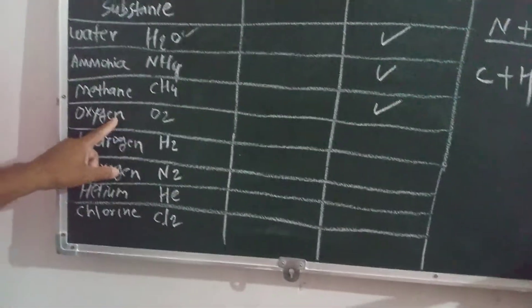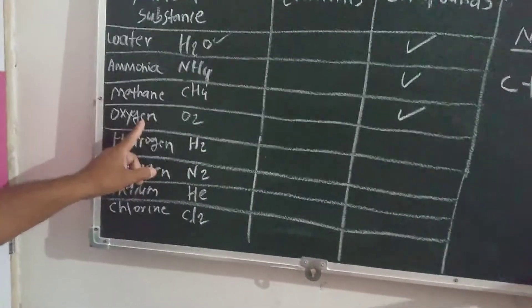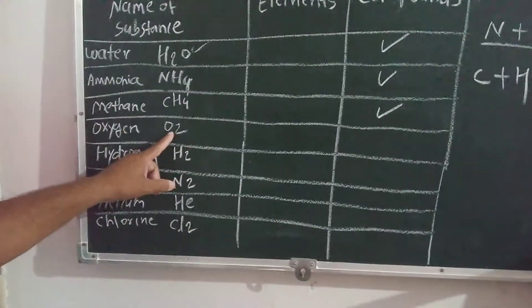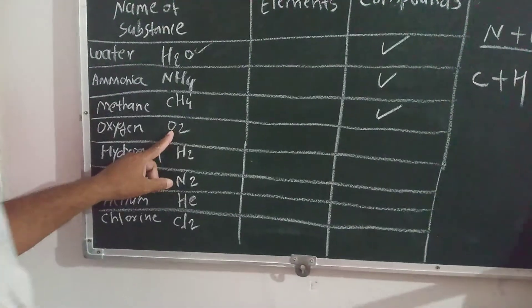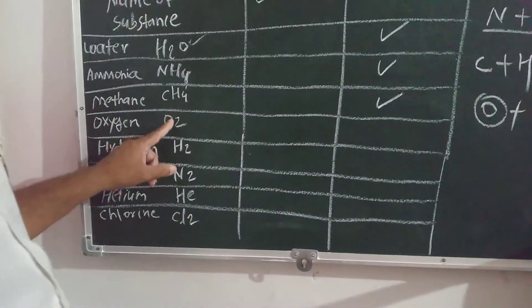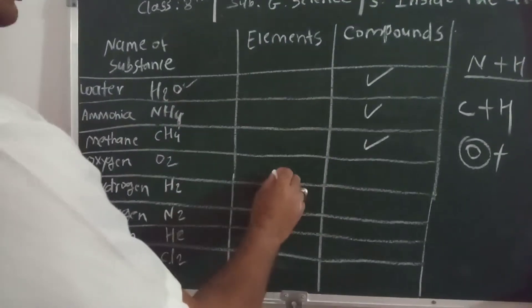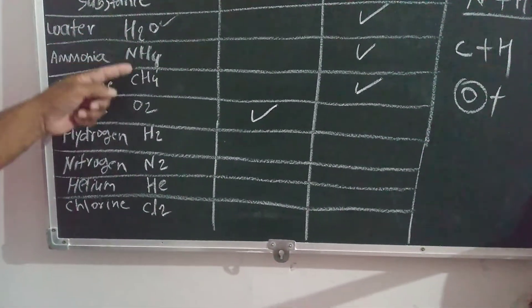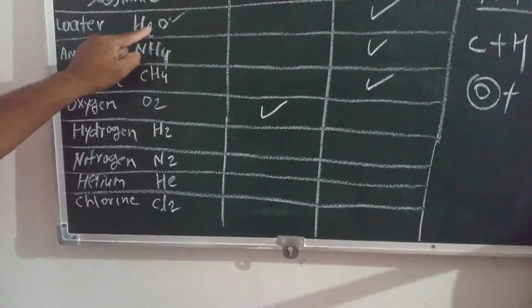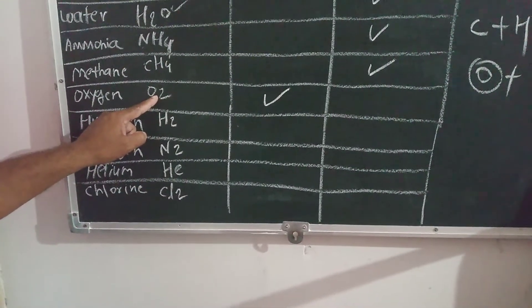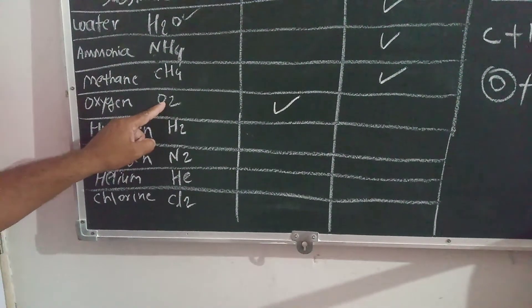The fourth example is oxygen. The formula is O2 — two atoms of oxygen form the molecule, but there is only one type of molecule here; only oxygen is present. There is no other molecule. So this type of substance is classified as an element. You can see the difference: the previous examples had two types of molecules, but here only one molecule type is present. Therefore we classify oxygen as an element.